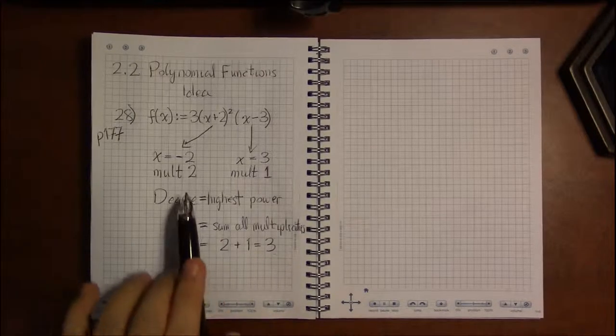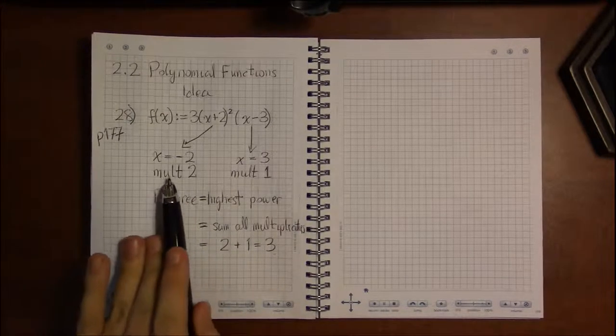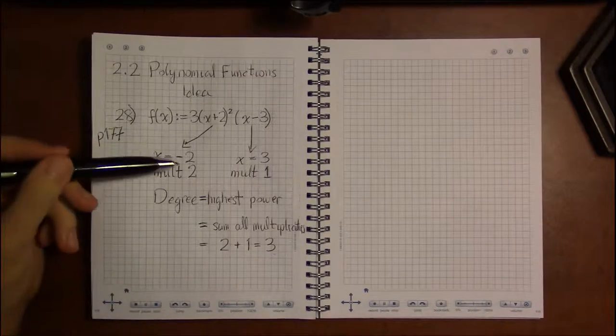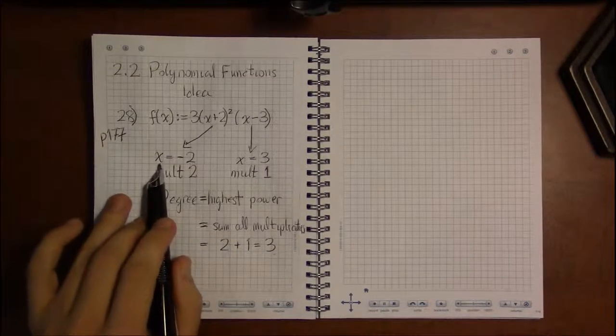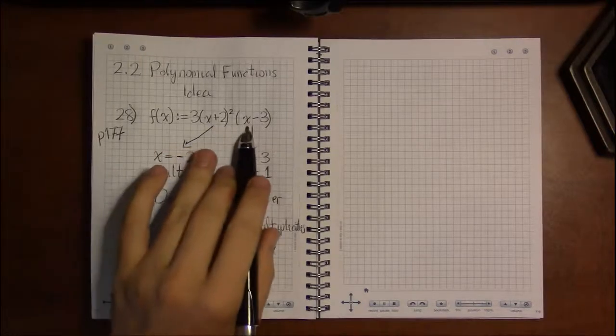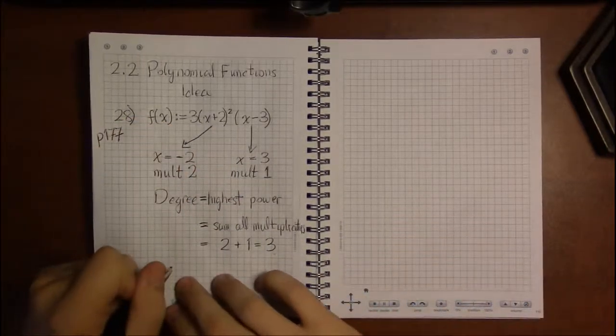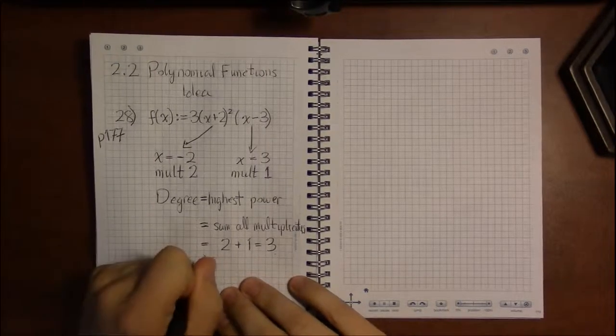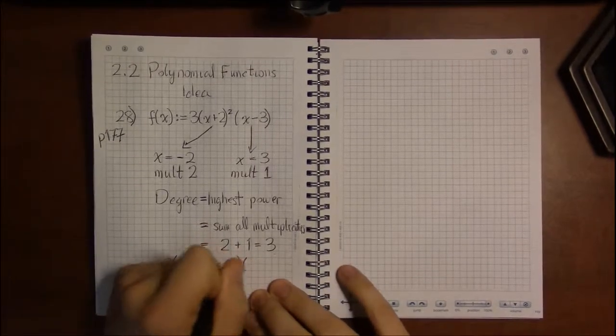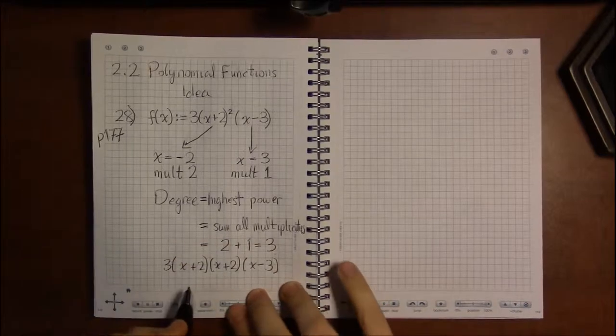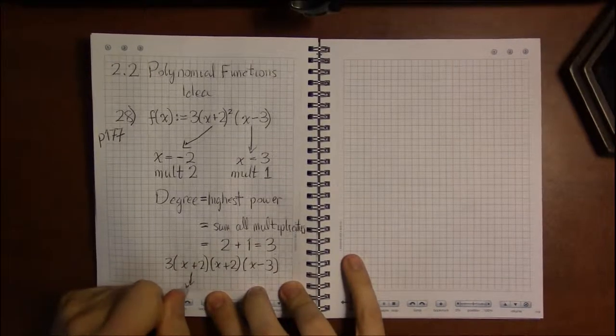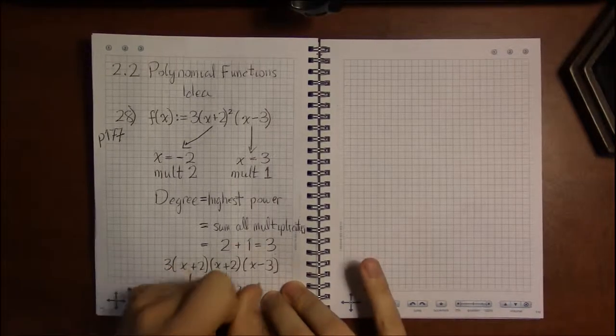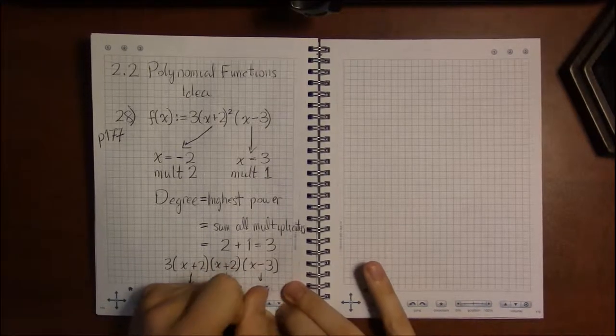Now, another connection between degrees and x-intercepts is that if you count multiplicities, so if you count minus 2 as being 2 roots, because in this case it kind of is, if you think about it as x plus 2, not squared, but x plus 2 times x plus 2 times x minus 3.